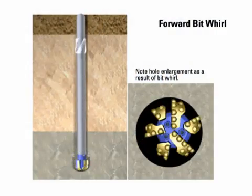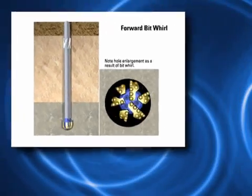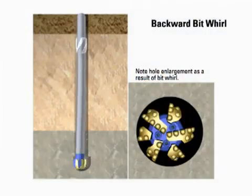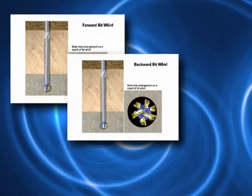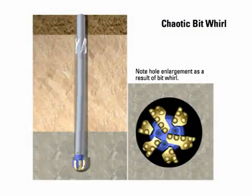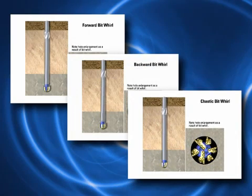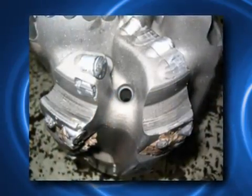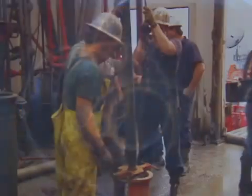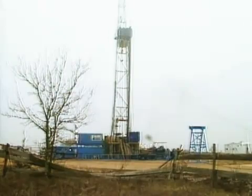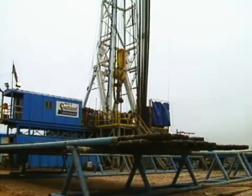Bit Whirl is associated with PDC bits because of their aggressive side-cutting action in harder rocks and near-vertical holes. It is caused by non-symmetric cutting action of a real formation that displaces the bit from its center of rotation and then allows the bit to move. Verification of shock and vibration can often be obtained by examining the bit after a trip. When dealing with BHA Whirl, it is sometimes necessary to stop drilling completely to cure it, depending on the severity of the shocks and difficulties with drilling.